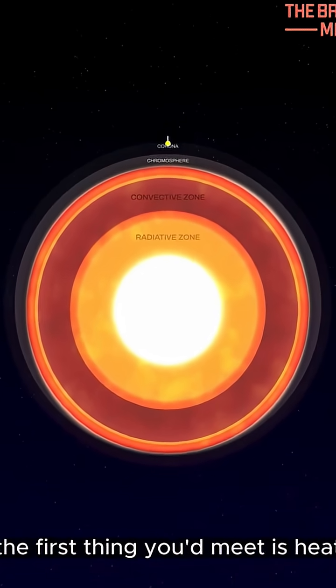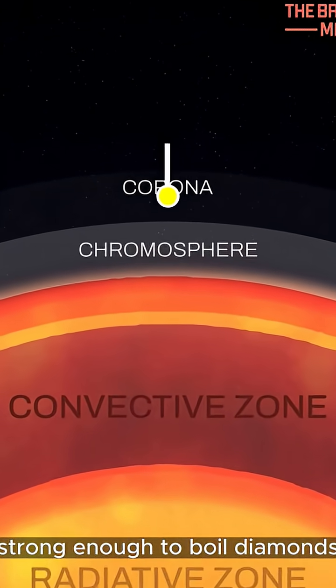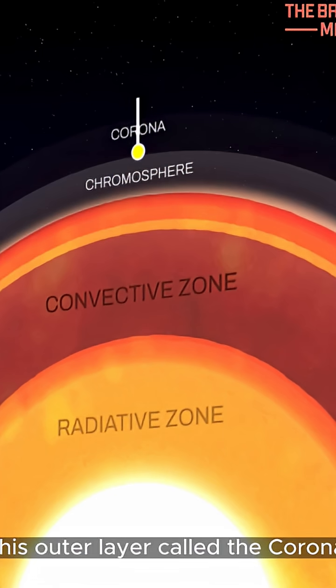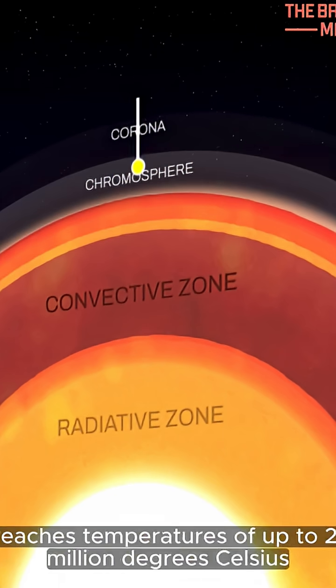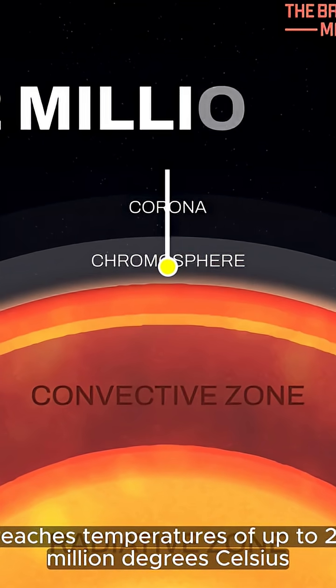If you dove into the sun, the first thing you'd meet is heat strong enough to boil diamonds. This outer layer, called the corona, reaches temperatures of up to 2 million degrees celsius.